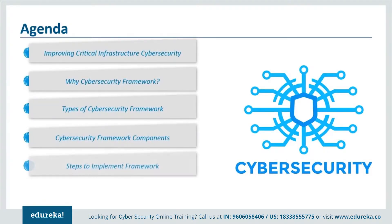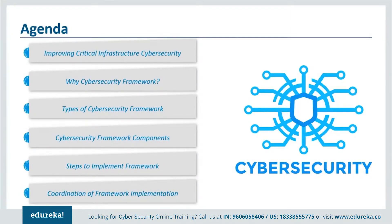To begin with, we'll see how the US government recognized the need for a reliable function to secure the national and economic infrastructure to improve critical infrastructure security. Next, we'll discuss the importance of cybersecurity frameworks and why they are required in an organization. Then I'll cover the different types of frameworks, their components, the steps required to implement frameworks in an organization, and finally a common flow of information and decisions at different levels within an organization.